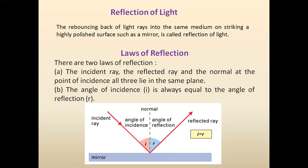The second law is that the angle of incidence is always equal to the angle of reflection. The angle between the incident ray and the normal is the angle of incidence, and the angle between the reflected ray and the normal is the angle of reflection. So, the angle of incidence is equal to the angle of reflection.